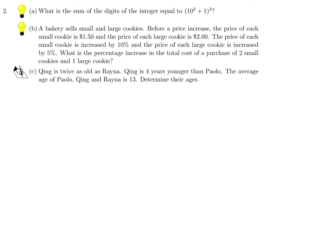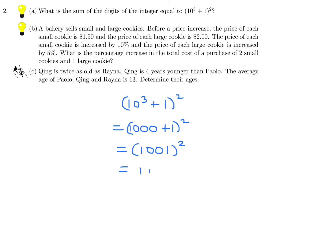What is the sum of the digits of the integer equal to 10 to the power of 3 plus 1, all squared? 10 to the power of 3 is 1000, so 1001 all squared. Squaring 1001 gives 1,002,001. The sum of the digits is 1 plus 2 plus 1, which equals 4.